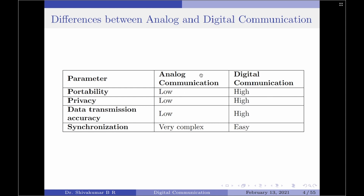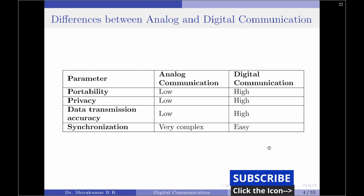Analog communication systems suffer from synchronization problems and therefore require complex hardware to provide proper synchronization between a transmitter and receiver. On the other hand, digital communication systems provide synchronization between the transmitter and receiver with a lot of ease. So that is about the differences between analog and digital communication. Thank you for watching, have a good day.